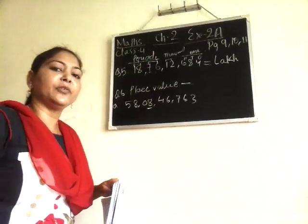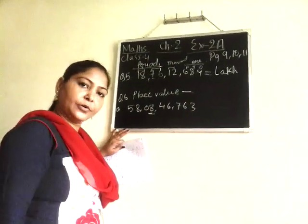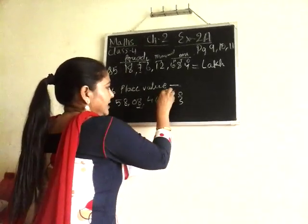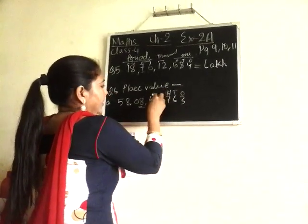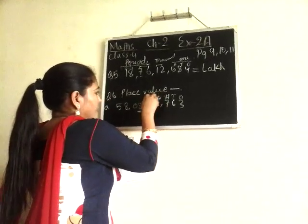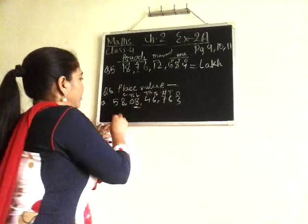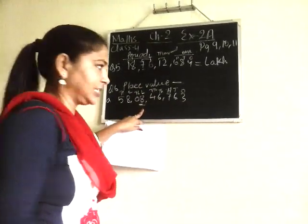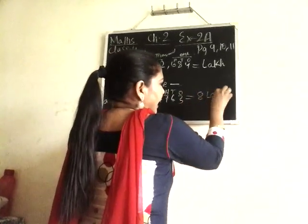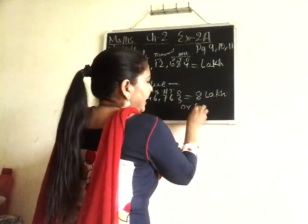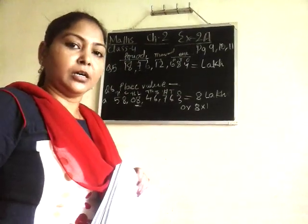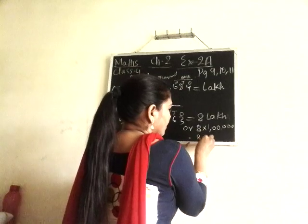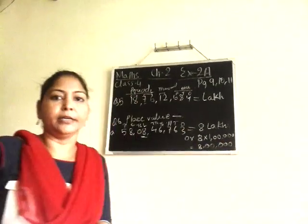Then we come to the next question where you have to write the place value. Eight has been underlined. Let us start writing the place value of individual digits: ones, tens, hundreds, thousands, ten thousands, lakhs, ten lakhs, crore, ten crore. Digit eight is in which place? Eight lakhs place. So we will write either eight lakhs, or we can write eight into — for lakhs it is a six-digit number with five zeros. In this way you will write the place value.